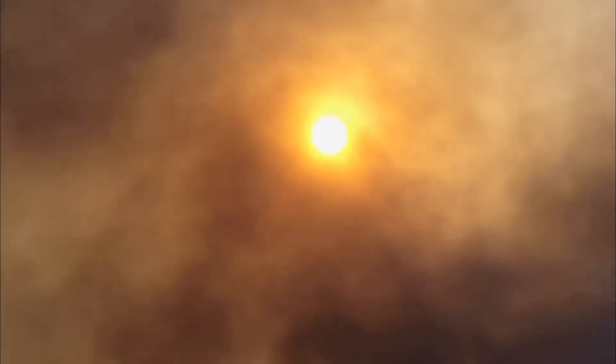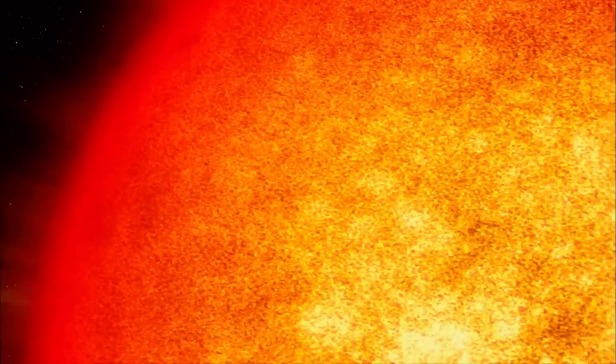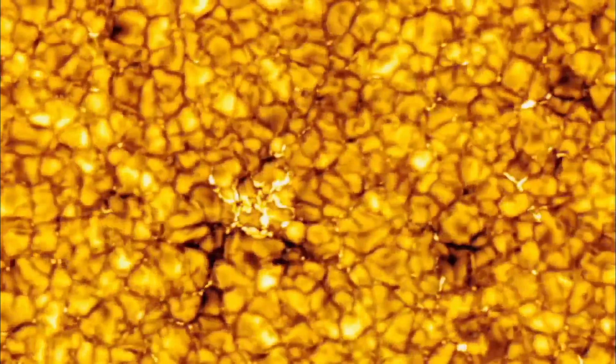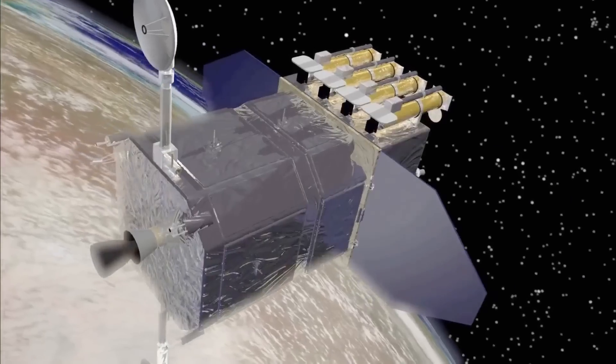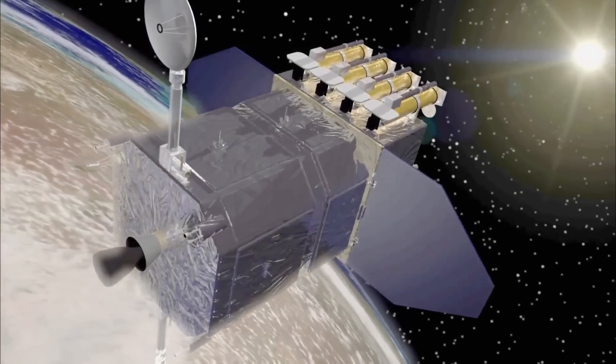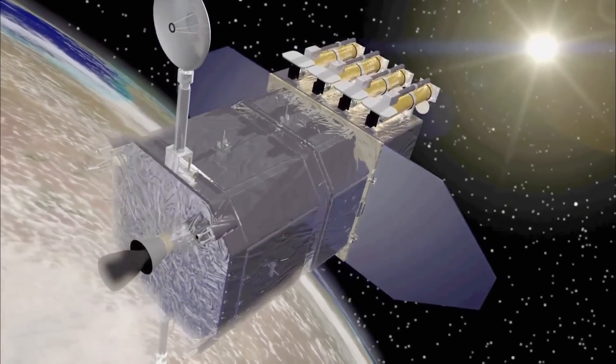Unlike a bell, the sun rings with 10 million different tones at once. We detect them from the tiny bulges from the pressure waves on the sun's surface. Solar satellites measure the height of the bulges with exquisite accuracy.